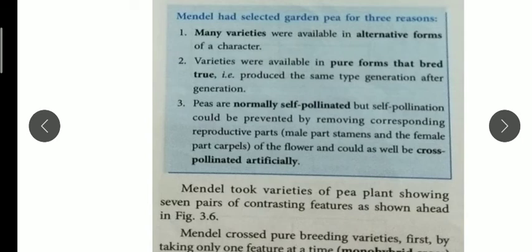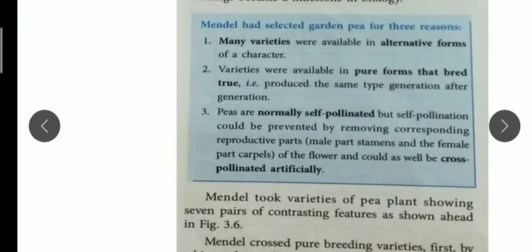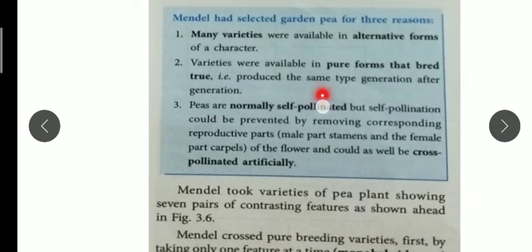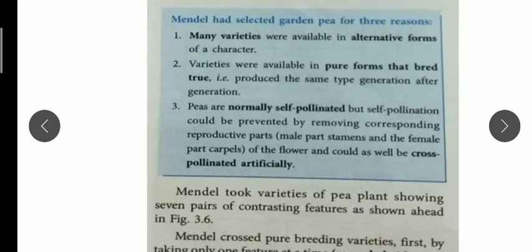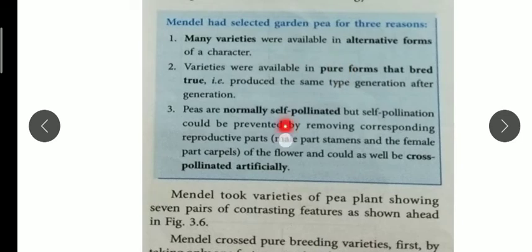The next reason is that varieties were available in pure form — there is no intermediate interbreeding. So the tall character will pass purely to the next generation, producing the same type generation after generation if that particular gene is passed on.